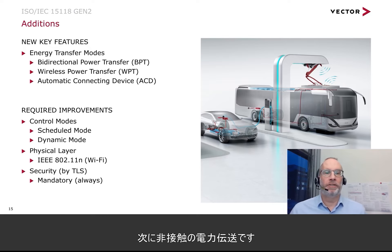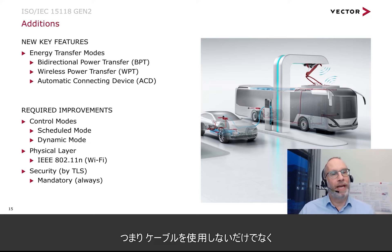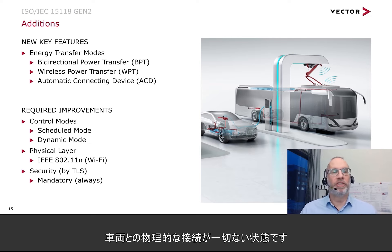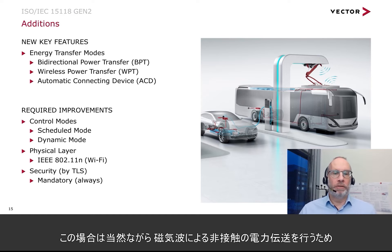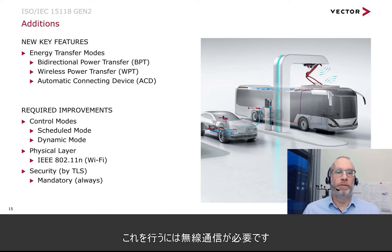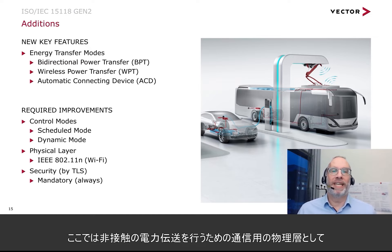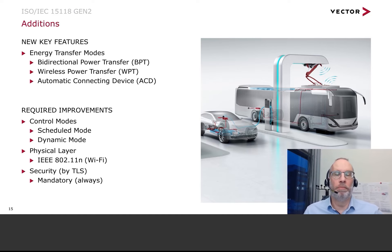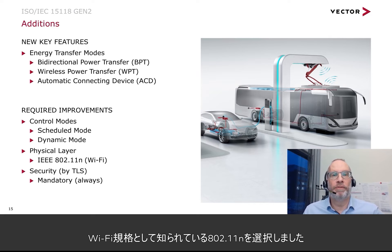The second part is wireless power transfer. We no longer have a cable — there is no physical connection to the vehicle at all. Using magnetic waves for wireless power transfer, we also need wireless data communication. In this case, we have selected 802.11n — also known as the Wi-Fi standard — as the physical layer for the wireless power transfer.